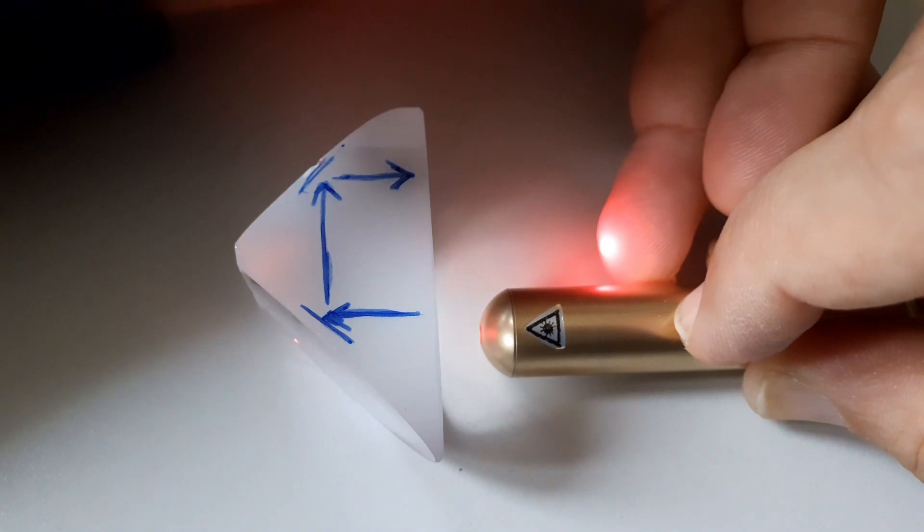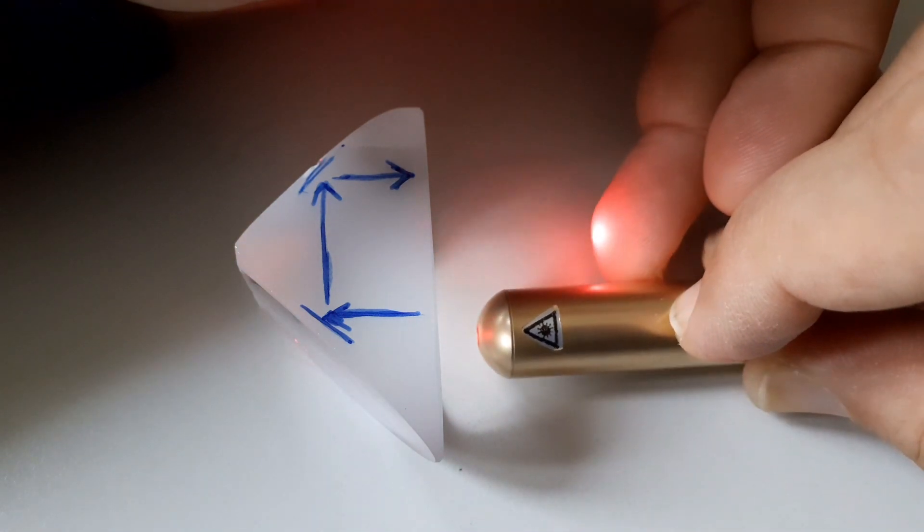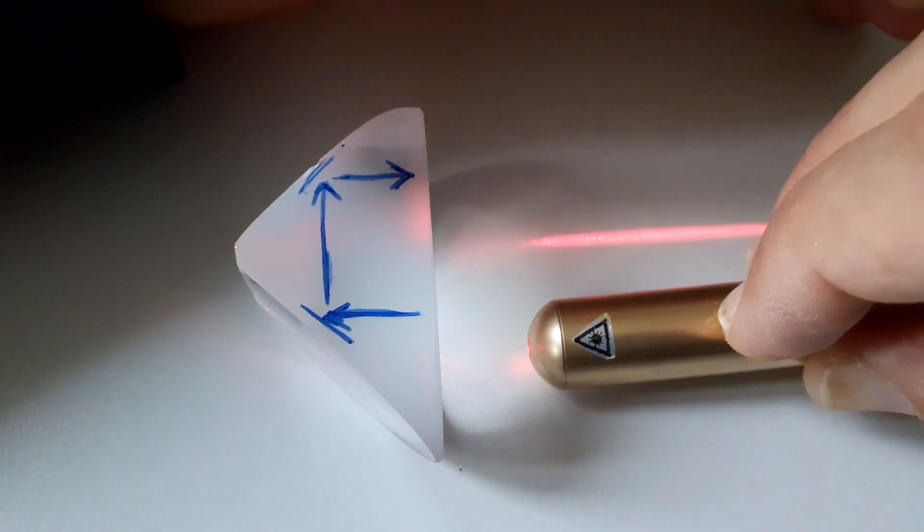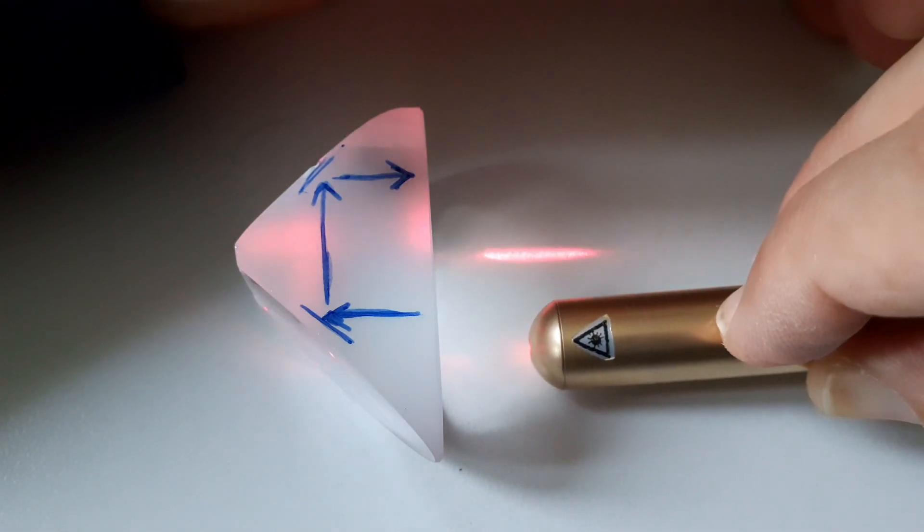And when I remove the finger, then it is also, you can see how it's reflected also on the table. Now you can actually see that there is a total reflection inside the prism.